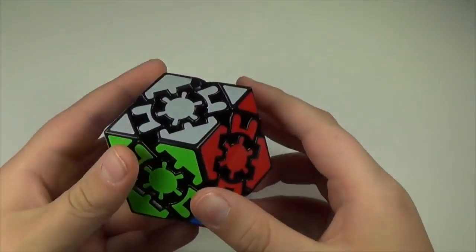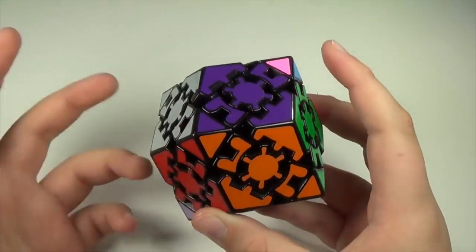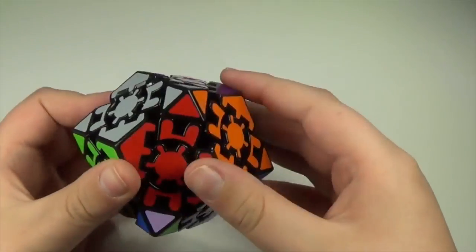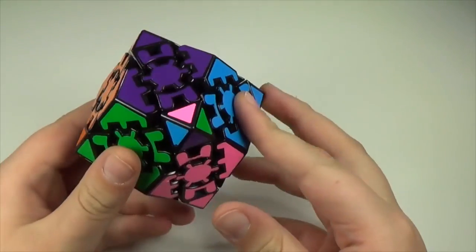Next, we have the Gear Change. This is a gear cube shape mod into a rhombic dodecahedron. It's a really cool cube, but I haven't quite figured out how to solve it yet.